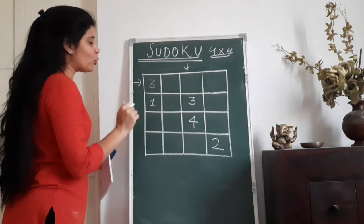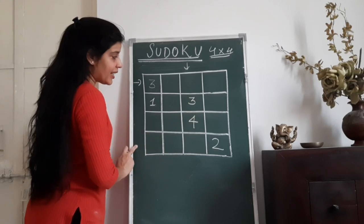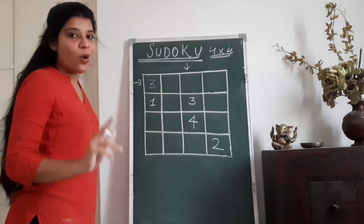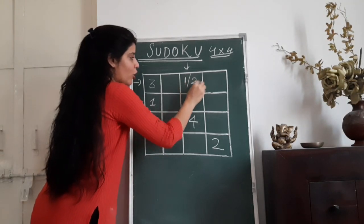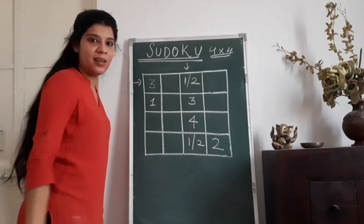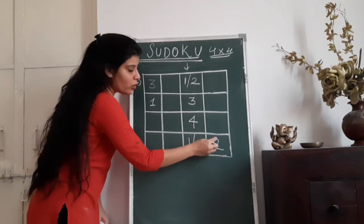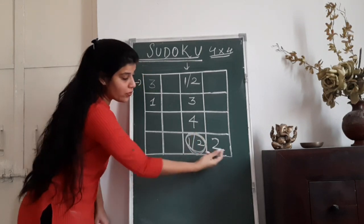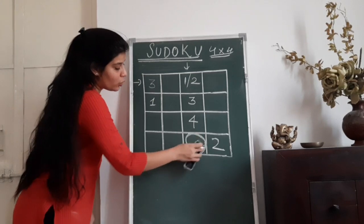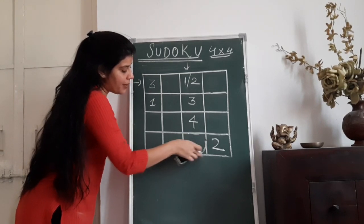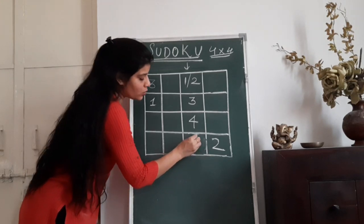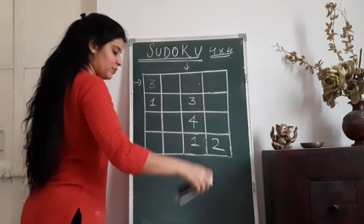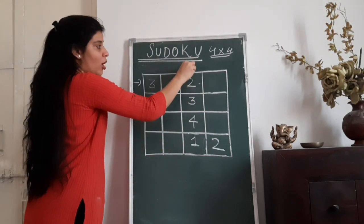How are we going to solve this Sudoku? If we look at the fourth row and third column, in the third column I can see 3 and 4 are already used. So either I can have 1 or 2 here. But as we already have 2 in the fourth row, therefore 2 will not come here — otherwise 2 will get repeated in the fourth row. So 2 will not come here, and therefore the number which will come here is 1, and the number which will come in the other cell is 2. This is how we have solved the third column of Sudoku.